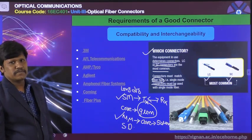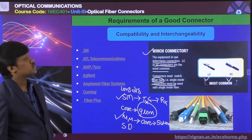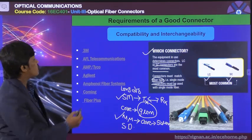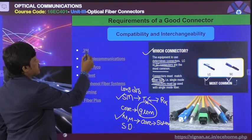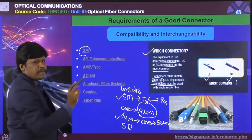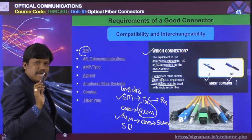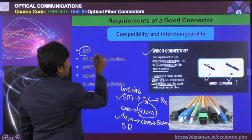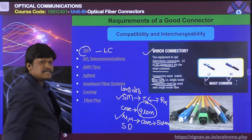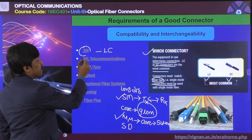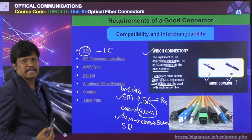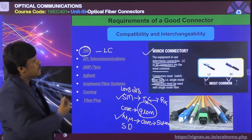Compatibility means connectors of the same type from different companies must be compatible. For example, LC connectors manufactured by 3M must be compatible with LC connectors manufactured by AFL Telecommunication. The connector type must be compatible from one manufacturer to another manufacturer.